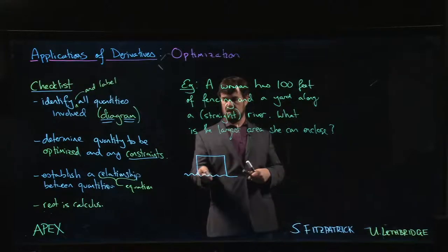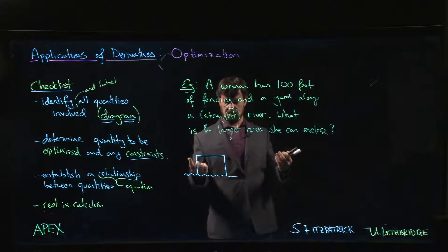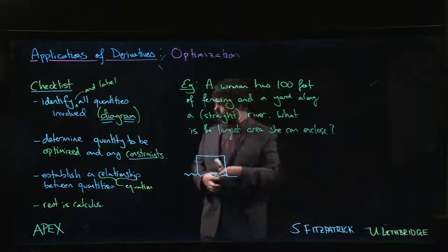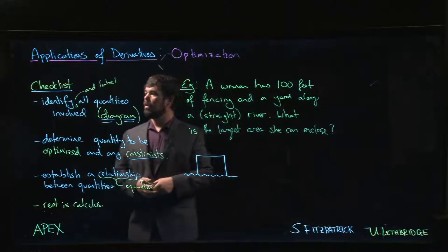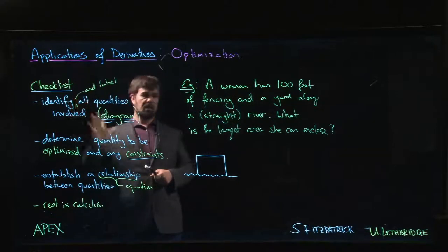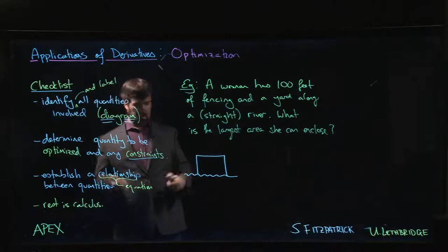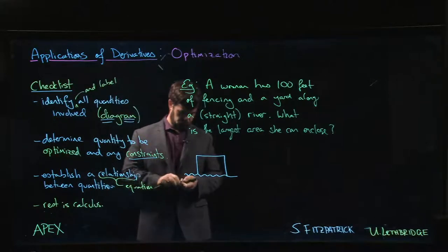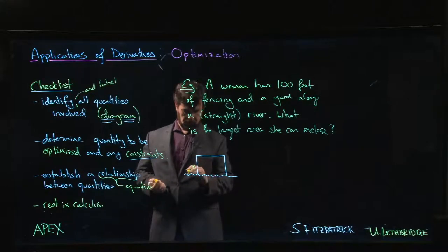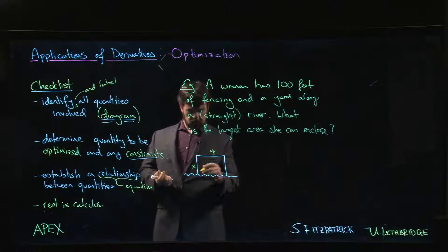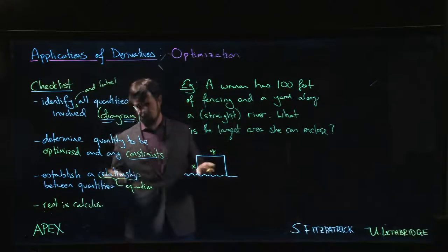Instead of fencing all four sides, we only fence three sides. So that means that this 100 feet of fencing needs to be used for three of the four sides of the yard because the fourth side is bordered by the river. So, identifying quantities involved, what are the quantities involved? We're trying to figure out the dimensions of the yard, so maybe we call them x and y, the width and length of the yard.